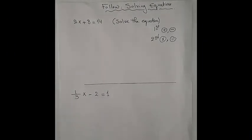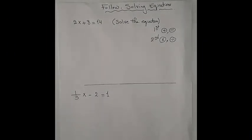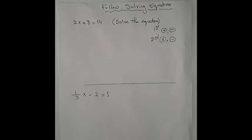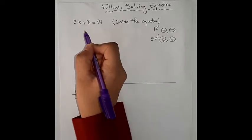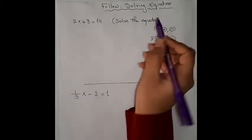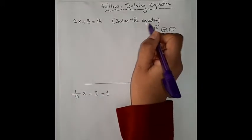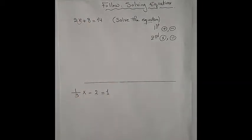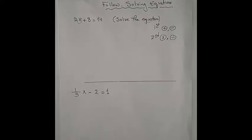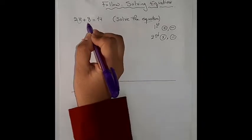Good morning. Today we will continue the last part of solving equations. What if we have an example like this: 2x plus 8 equals 14. We'll solve this equation — we have to get the value of x, and to get the value of x we have to move away its neighbors. What are the neighbors of x?